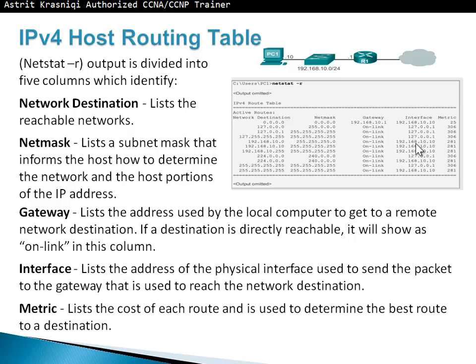Then interface — a list of addresses or the physical interface used to send the packet to the gateway that is used to reach the network destination. And finally, metric — which lists the cost of each route and is used to determine the best path to the destination. The lower the metric, the better.